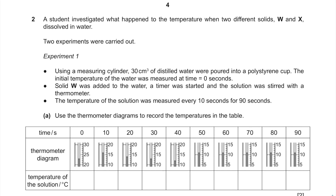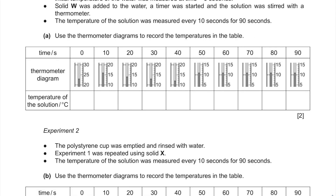Use the thermometer diagrams to record the temperatures in the table. Each incremental line stands for 1 degree. So reading them: 23 degrees, 16 degrees, 14 degrees, 13 degrees, 12 degrees, and then levelling out at 11 degrees for the remaining readings.